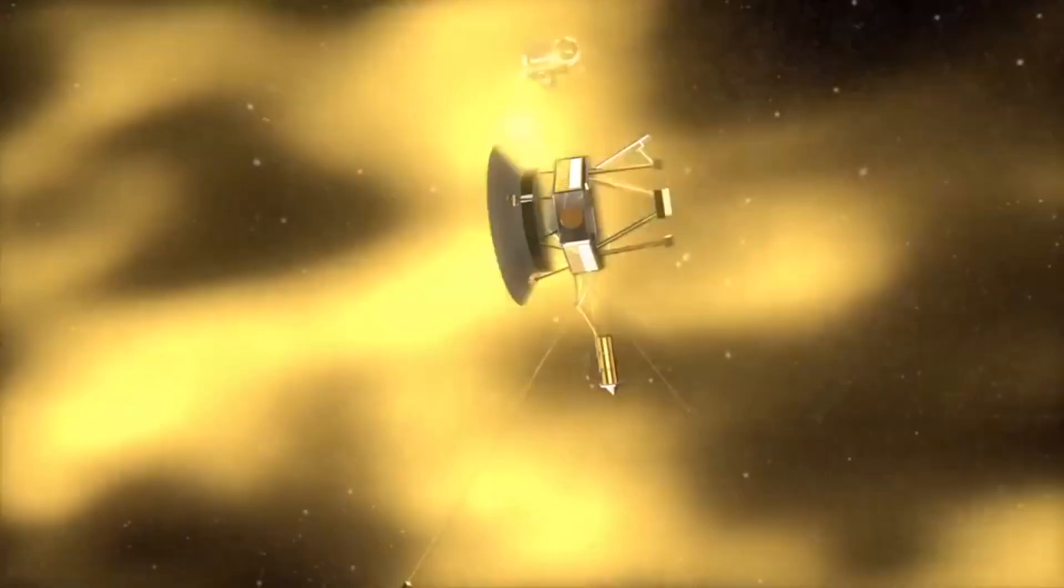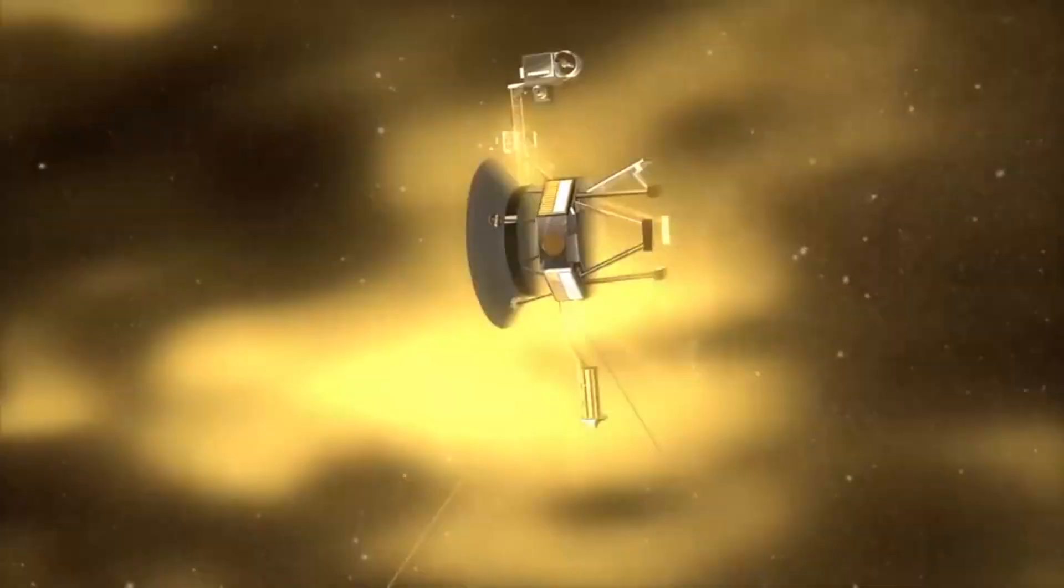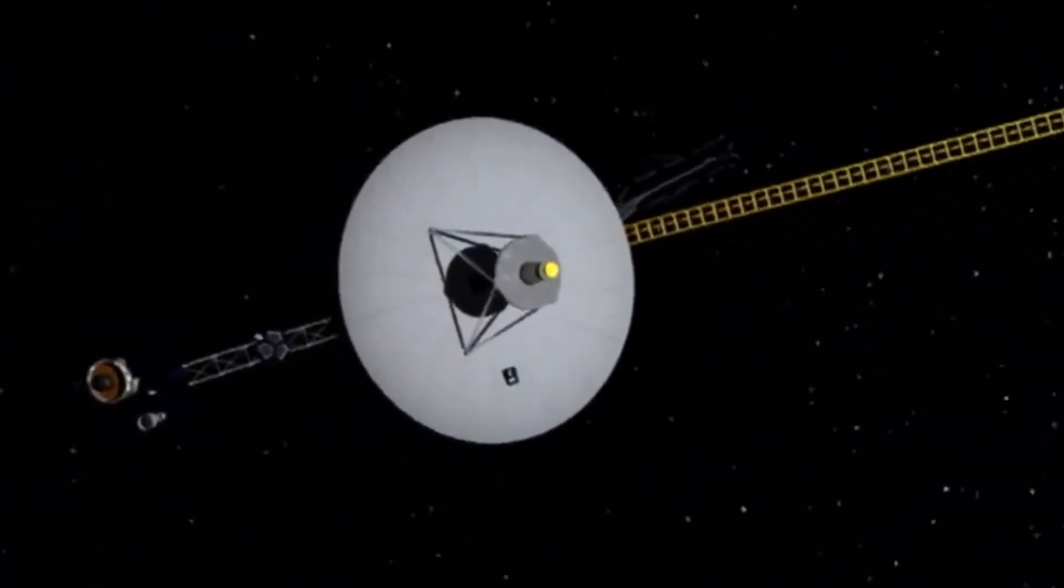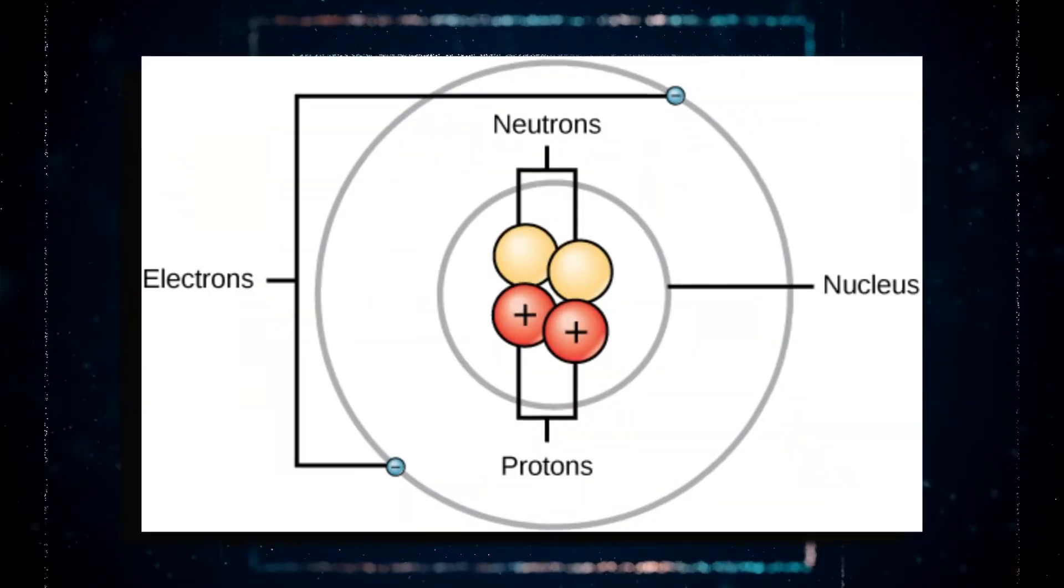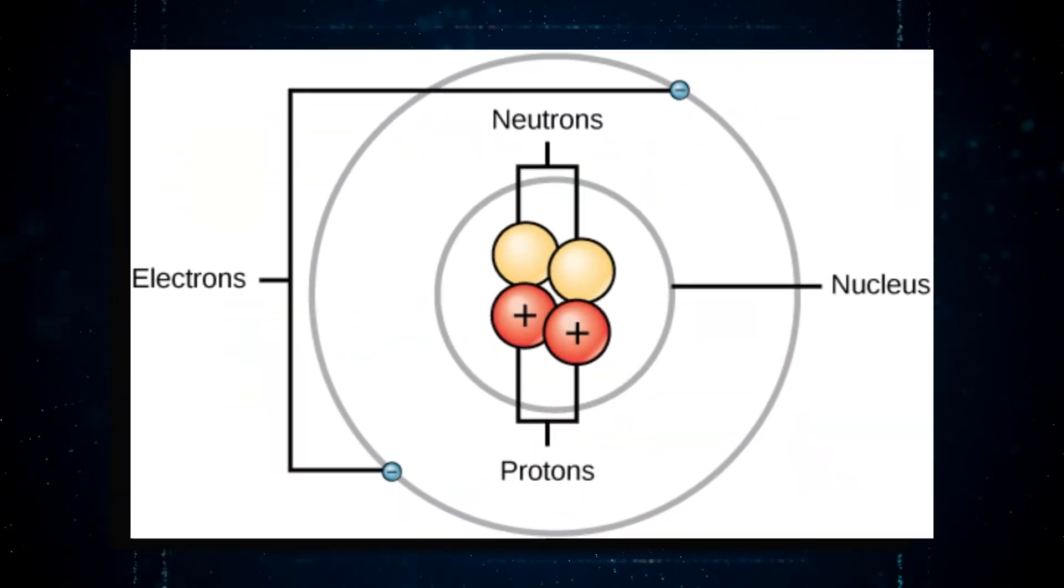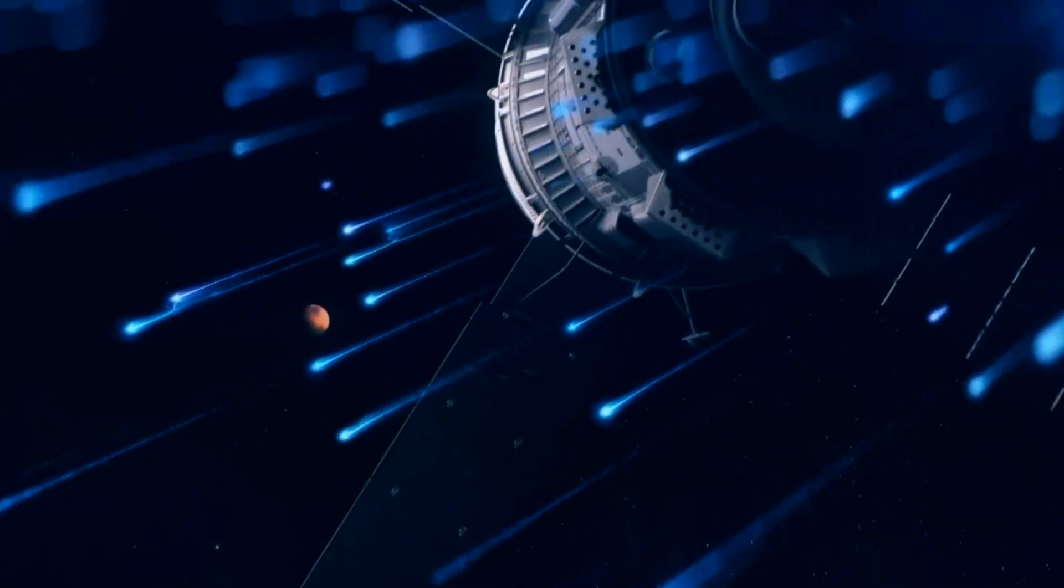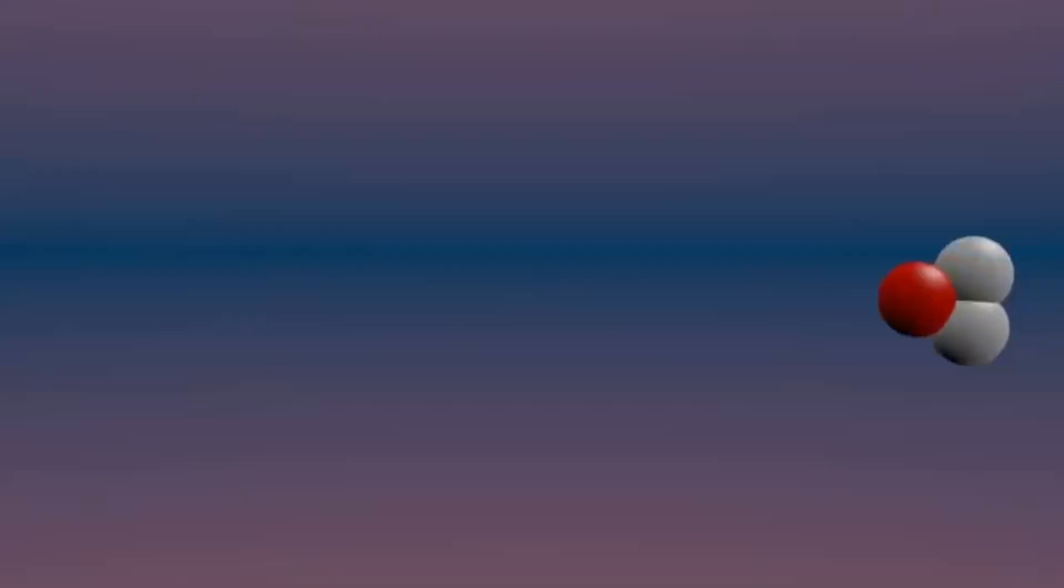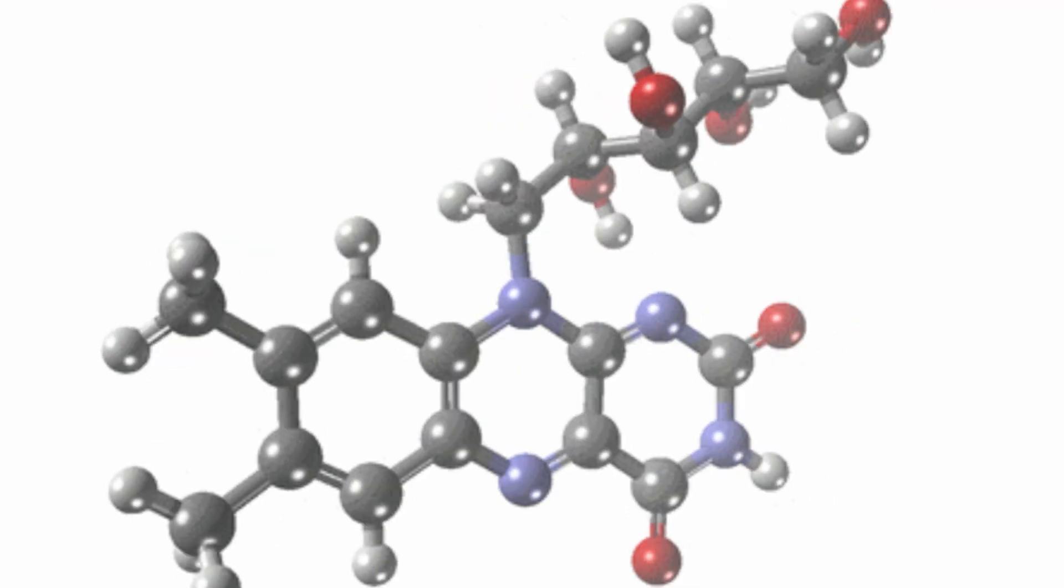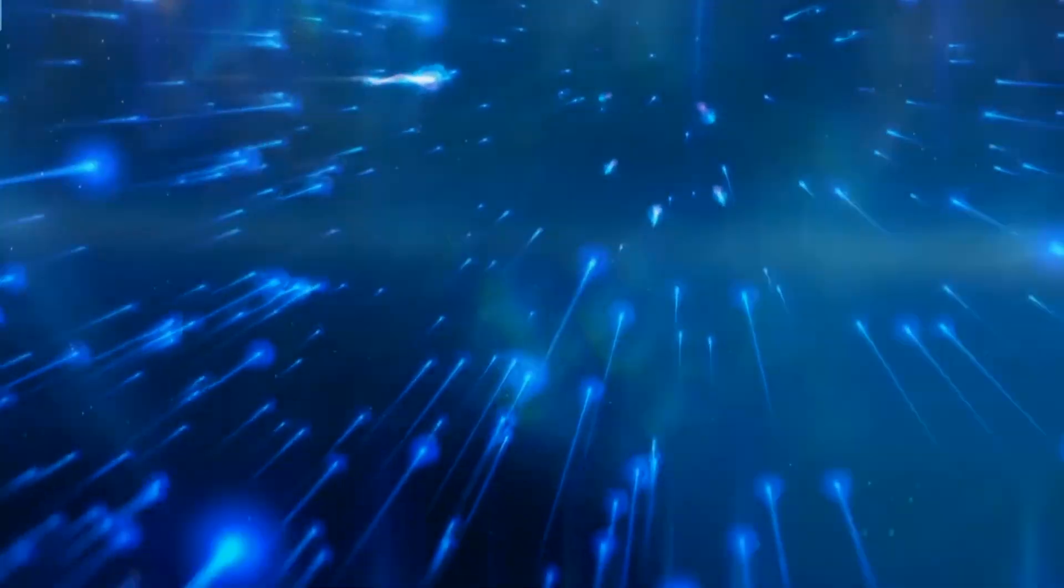A notable achievement was Voyager's measurement of cosmic ray composition. Using its instruments, the spacecraft detected a diverse array of particles, including protons, electrons and atomic nuclei. These measurements unveiled that the majority of cosmic rays are comprised of hydrogen nuclei, protons and helium nuclei, alpha particles, with small amounts of heavier elements. This composition offered important hints about the potential sources and acceleration mechanisms of cosmic rays.